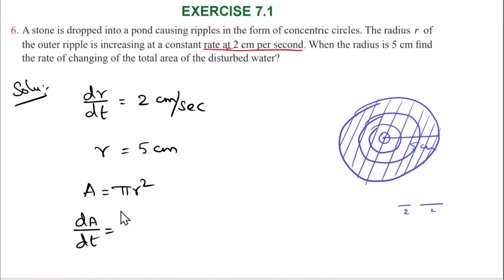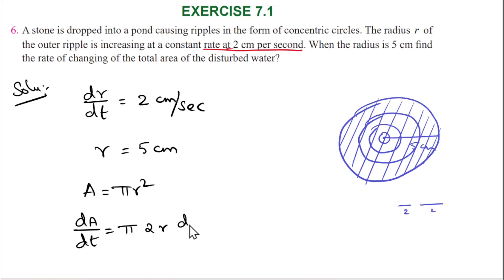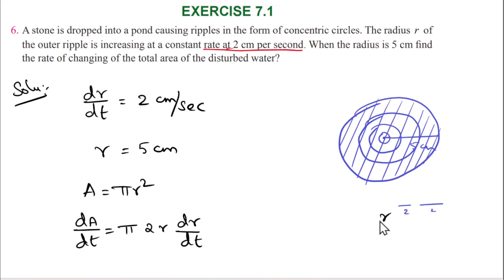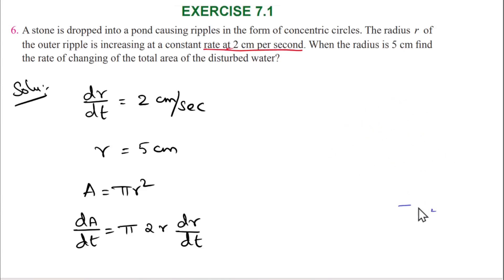We differentiate A = πr² with respect to time. Here t is the independent variable, and both A and r are functions of t. Differentiating, dA/dt = π · 2r · dr/dt. Now we substitute the given values: when r = 5 and dr/dt = 2.